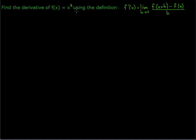In this video, we're going to use what's called the definition of the derivative to find the derivative of a given function. You might recall from an earlier video, the definition of the derivative is this limit expression: the limit as h goes to 0 of f of x plus h minus f of x over h. If you'd like a quick review on how that limit expression came about, you can check out our video on the definition of the derivative introduction.